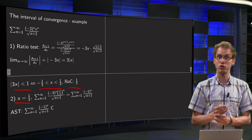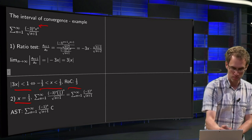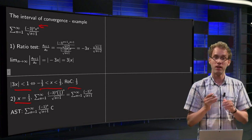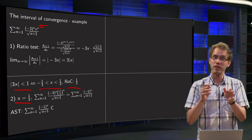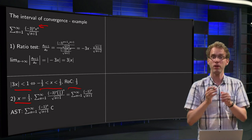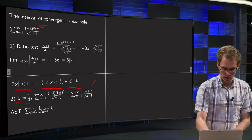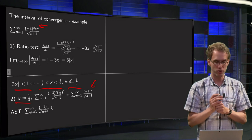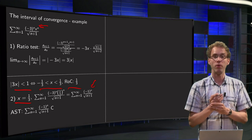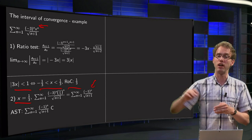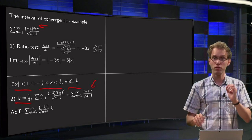Check both boundary points. Starting with x equals 1/3: plug that into the power series to get minus 3 to the power n times (1/3) to the power n, which combines to (minus 3 times 1/3) to the power n, simplifying to minus 1 to the power n divided by the square root of n+1. By the alternating series test, b_n equals 1 over the square root of n+1 decays to 0, so the series converges.